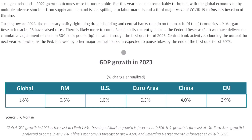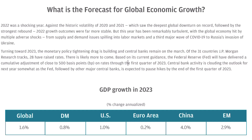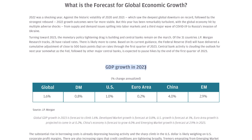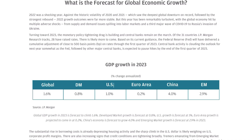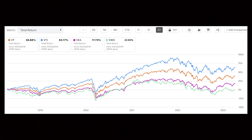One legit reason people invest in international companies is due to varying growth rates. This is a report by JP Morgan with GDP growth estimates for 2023: globally at 1.6%, domestic markets at 0.8%, the US at 1% growth, China at 4%, and emerging markets at 2.9%. So if you have a hunch that the US market is overvalued and emerging markets have been beat up recently, that could be a good reason to enter a position in some international plays. Strictly in terms of performance, over the past five years — which isn't that long a timeframe — the US has been one of the best markets to be investing in.